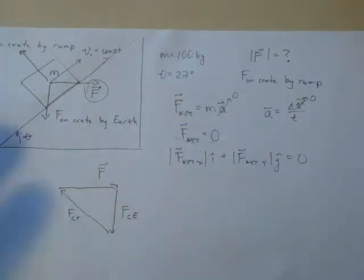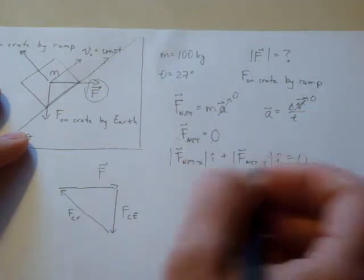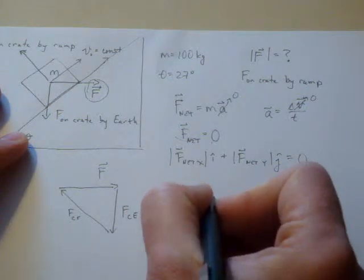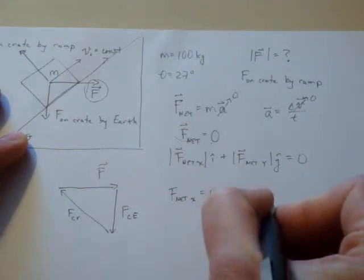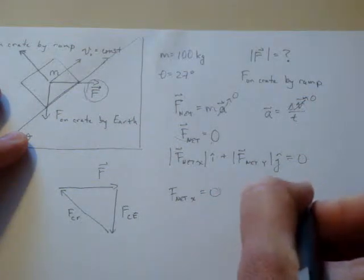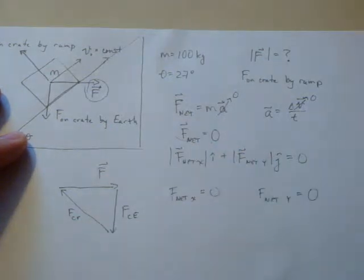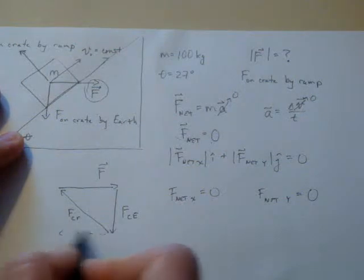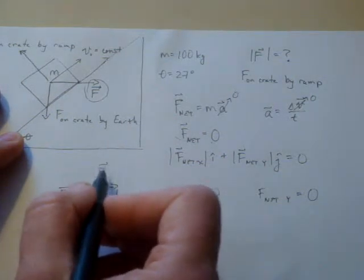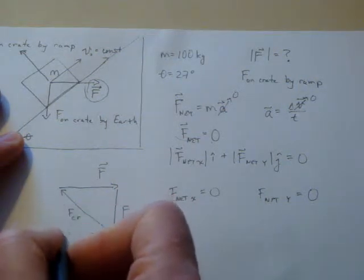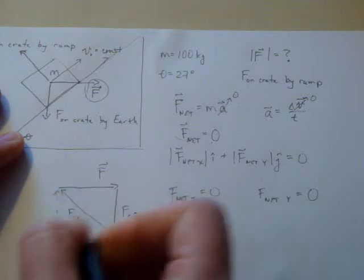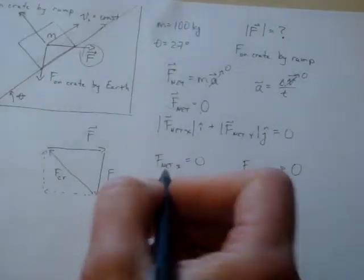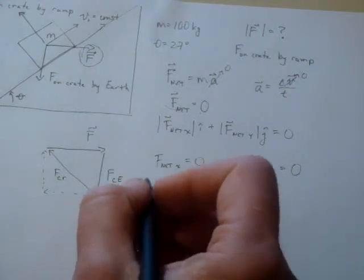We can write down each of these values separately, so that the net force in the x direction is going to be equal to zero independently, and the net force in the y direction as well. We can see graphically that the x component of the force on the crate by the ramp has to account for the external force pushing it up, and the vertical component has to account for the force on the crate by the earth.